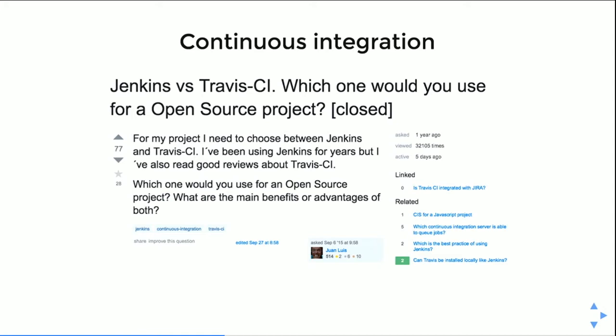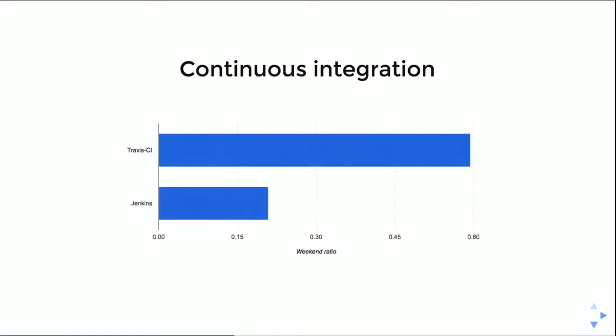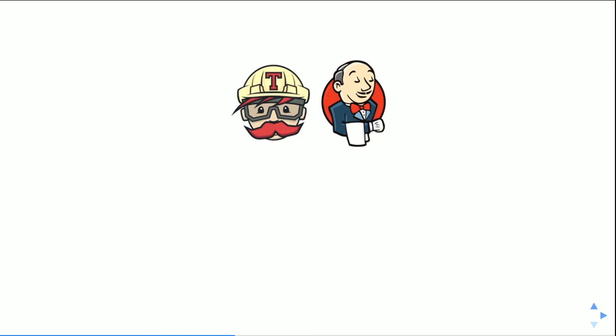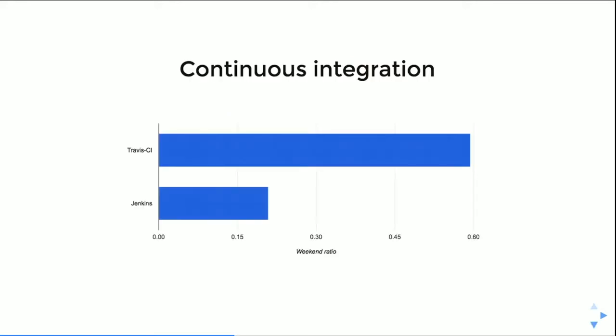I also looked at similar technologies. For continuous integration, Travis CI has a much higher weekend index than Jenkins. Why? Travis is hosted free for open-source projects, while with Jenkins you have to host it yourself. So if you're working on a hobby or open-source project, you'd use Travis and ask more weekend questions. The takeaway: if you want people to use your product in their free time, make it as easy as possible for them.